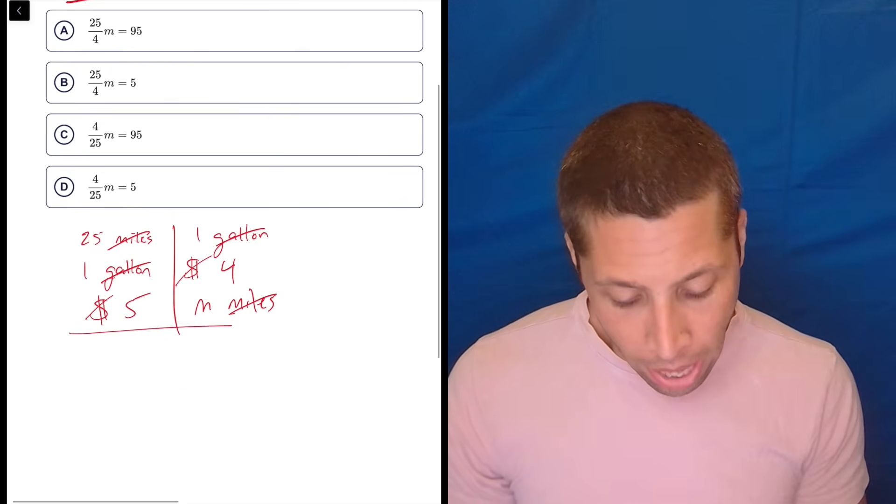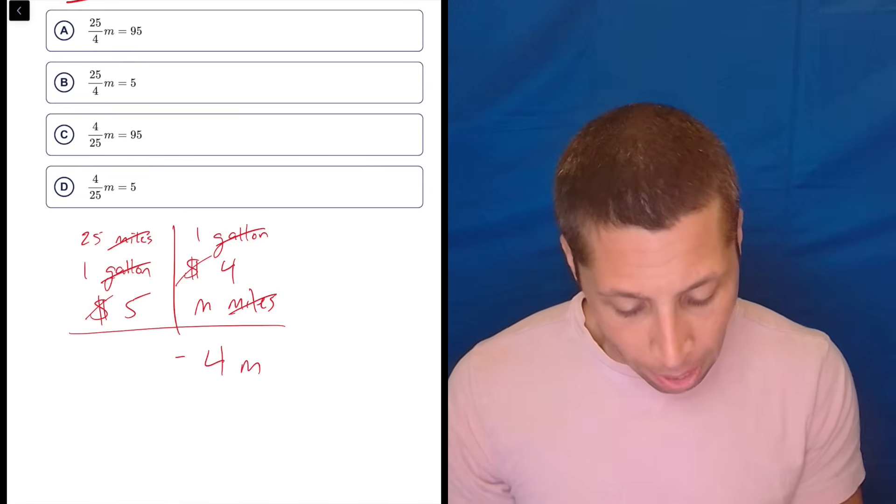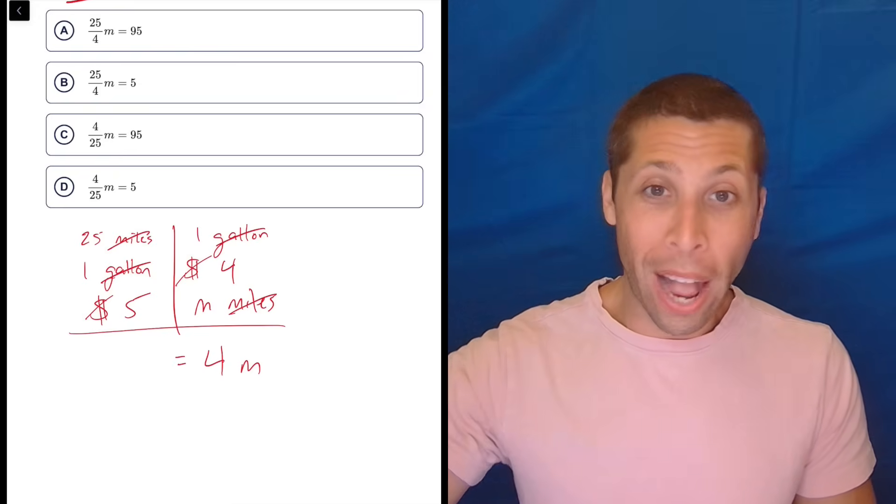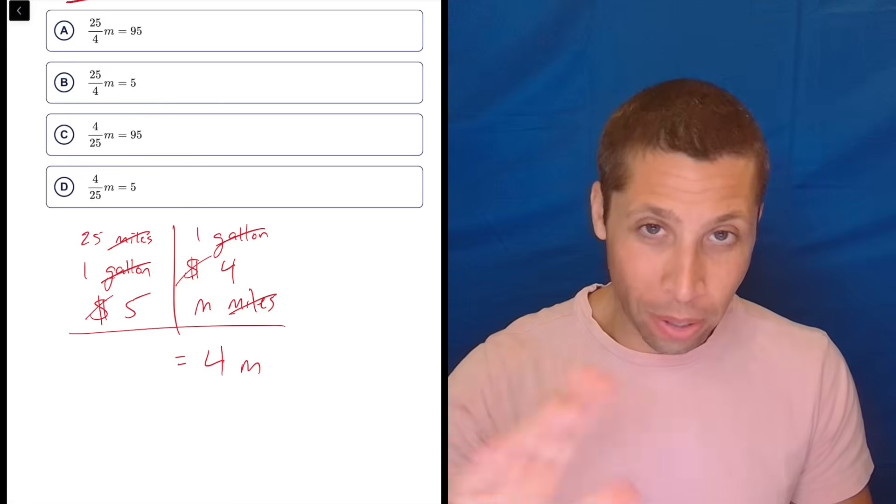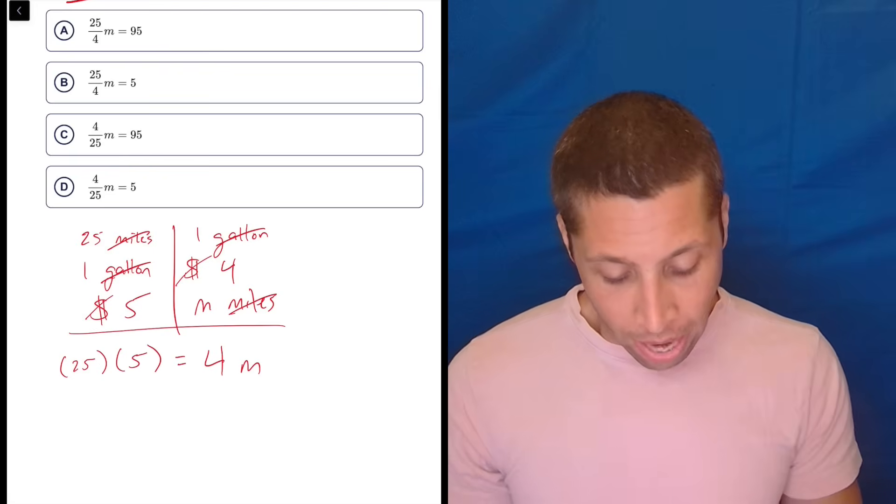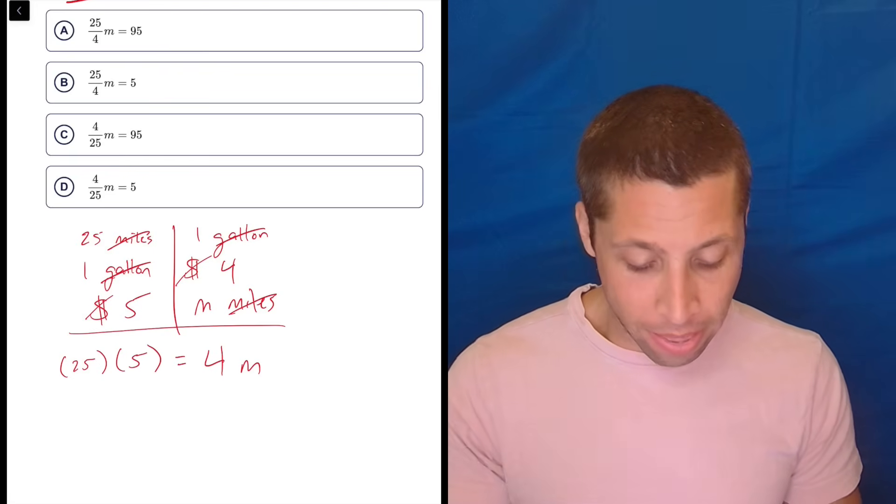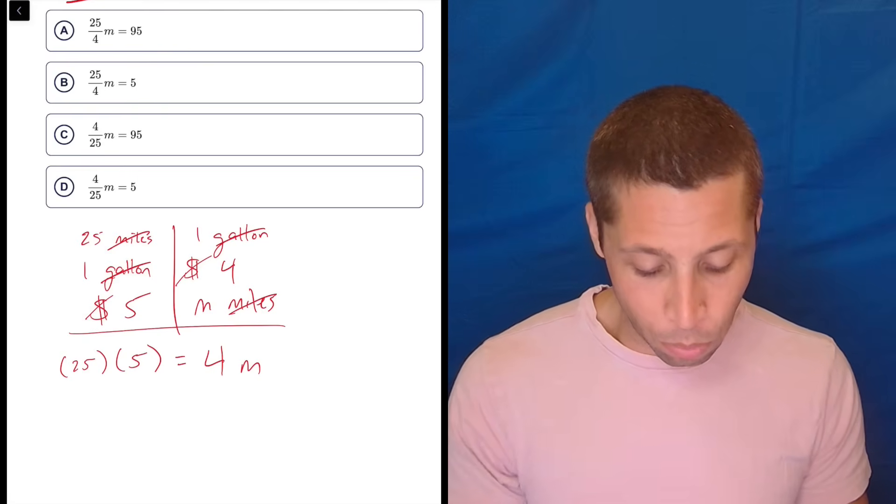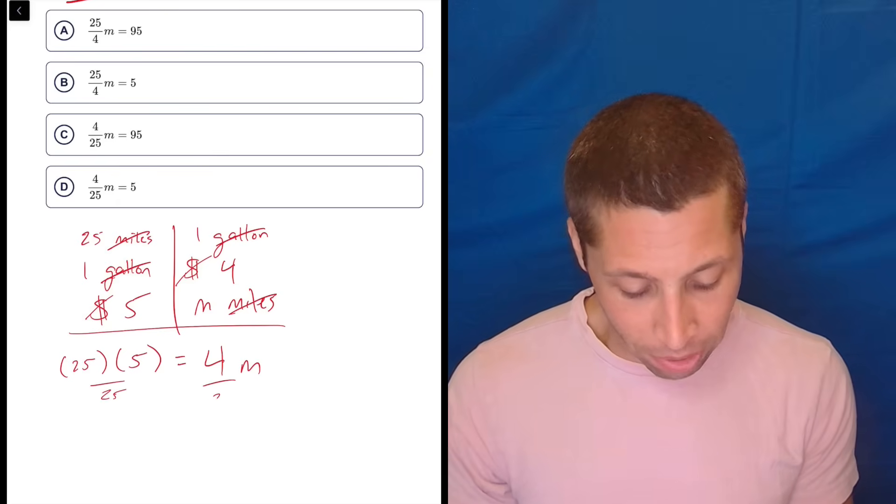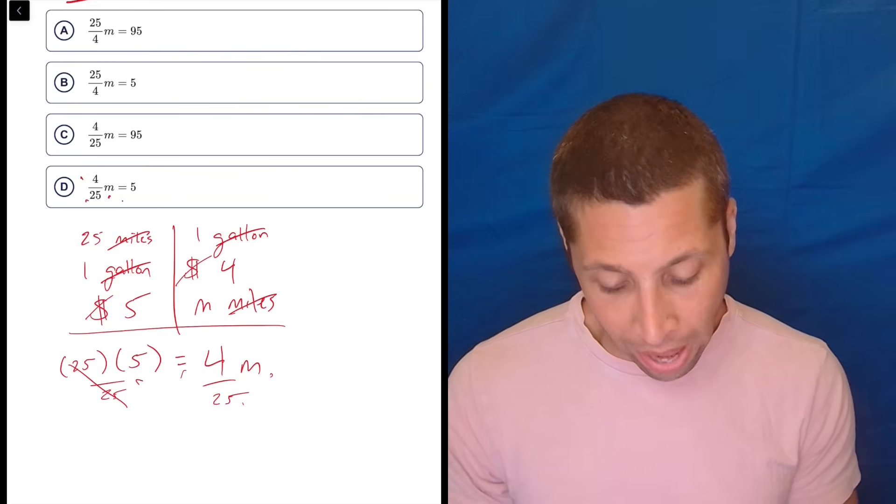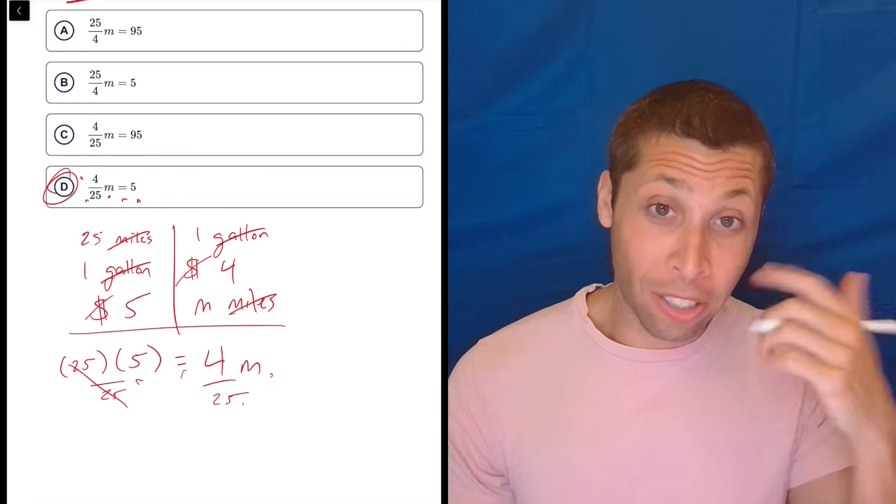And so if I do that, I'm going to have 4M on this side. And this is where maybe looking at the answer choices and keeping track of what you're looking for can help, because you could multiply 5 and 25, and I'll do that in a second. But you could also just keep them separate for a sec and recognize, hey, I need to make this look like one of those equations. I've got a 4M. And so what can I do here? Well, if I divide both sides by 25, what would I end up with? M times 4/25, M times 4/25 equals 5. It's D. So you don't actually need to solve for anything.